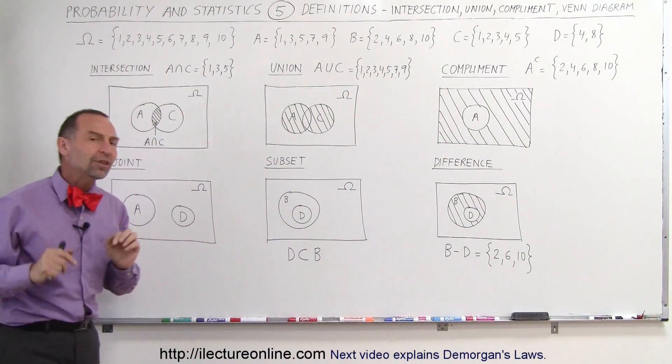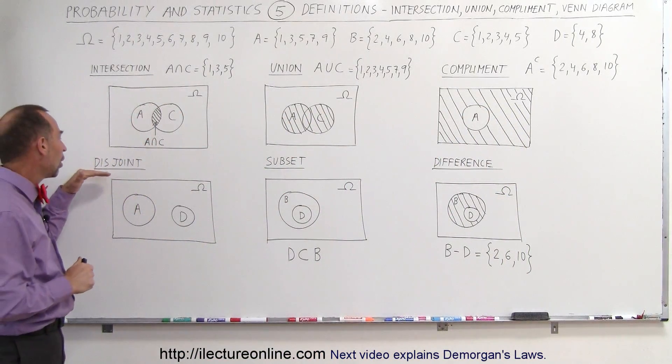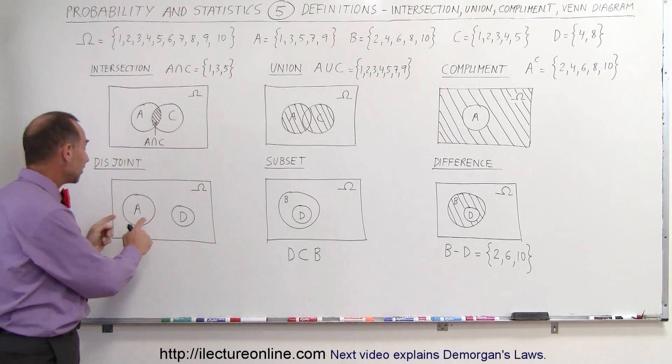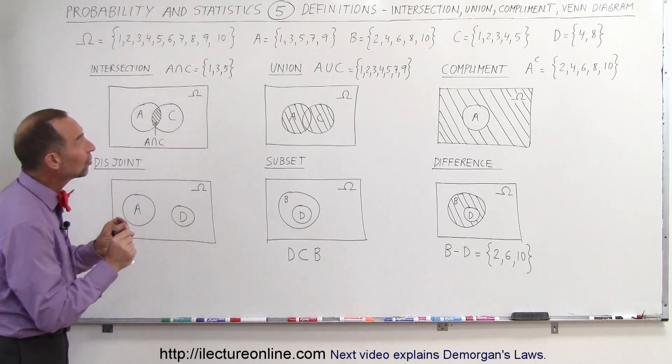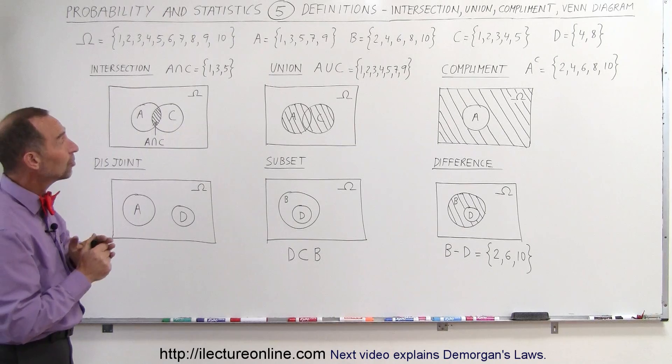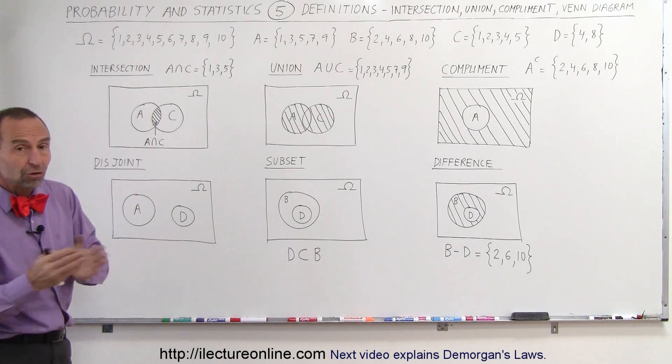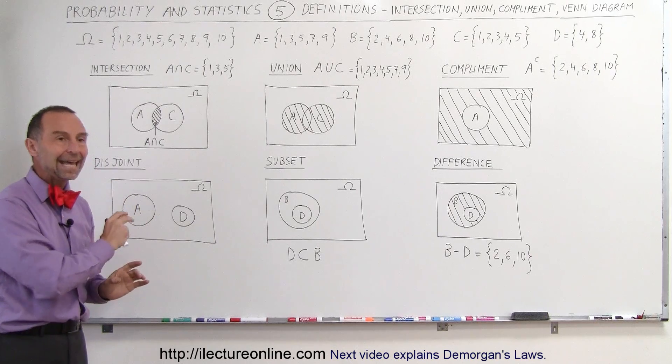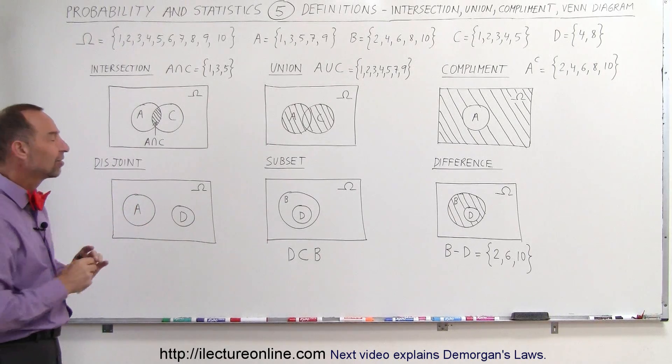There are three more things we should define. One is what we call disjoint sets or subsets. Here we have two sets A and D, and notice that A and D have nothing in common. A has only five odd numbers, D has two even numbers, there's nothing in common. These are what we call disjoint sets—A and D have no elements in common.